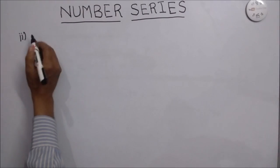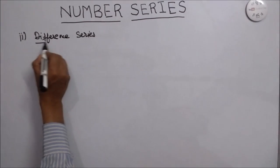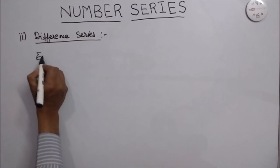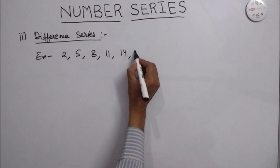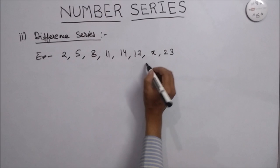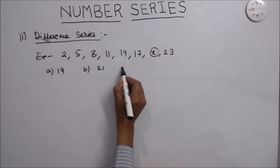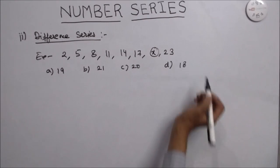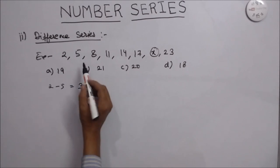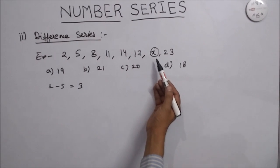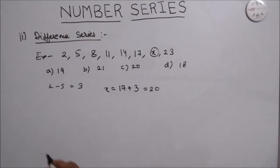Second is the difference series. In this series, there is a constant difference between the numbers. We take the example: 2, 5, 8, 11, 14, 17, X, and 23. We have to find X. Options: A is 19, B is 21, C is 20, and D is 18. The difference between 2 and 5 is 3, and the difference between subsequent numbers is also 3. So X will be 17 plus 3, that is 20.